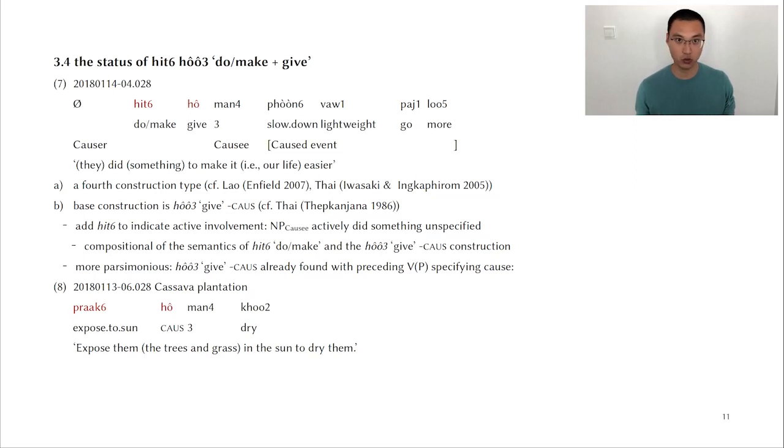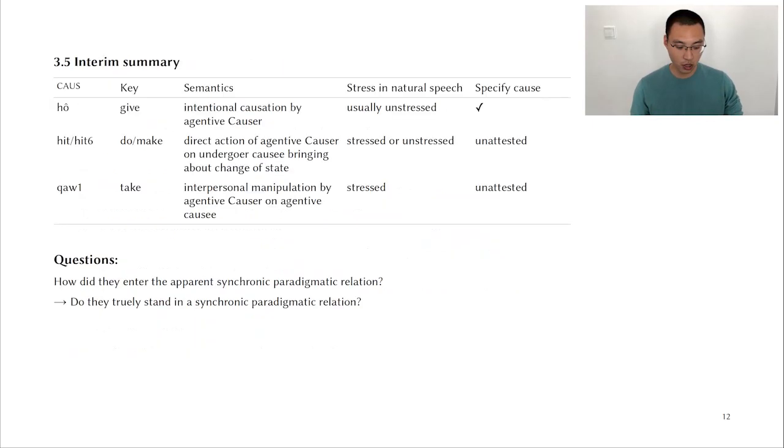So how do we know that? Well, first of all, we know that it is possible to add a verb before hít hǎi, specifying the exact causing activity, the exact event or activity that the causer did to bring about the caused event. And this is shown in example eight. The speaker said we expose them, expose the trees to the sun to dry them. So it is more plausible because we know that it's possible to make such combinations in Saek. So a quick summary of what we know, which gives rise to the question of how did they enter this apparent synchronic paradigmatic relation. And this question is also going to inform us about whether these constructions truly stand in a synchronic paradigmatic relation.